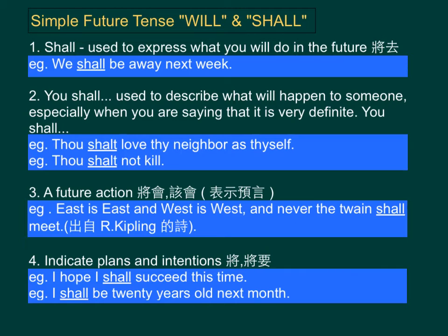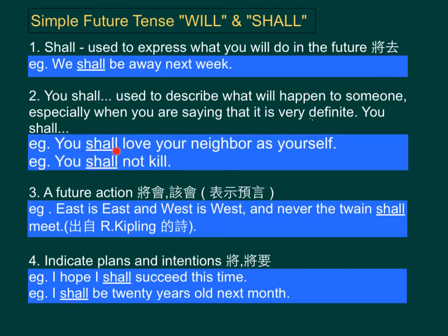Number two: 'you shall' is used to describe what will happen to someone, especially when you are saying something that is very definite. For example, thou shalt love thy neighbor as thyself, or thou shalt not kill. Just for your reference, both these sentences are written in Old English, as they are from the Bible. In Modern English, we can say, you shall love your neighbor as yourself, or you shall not kill.